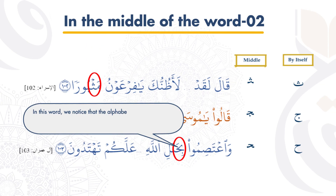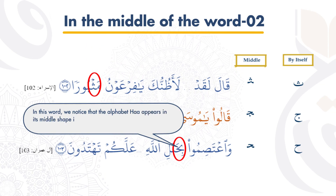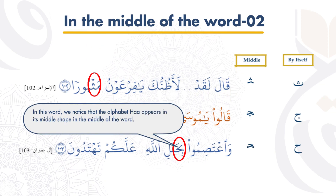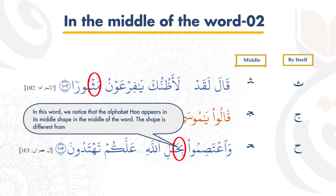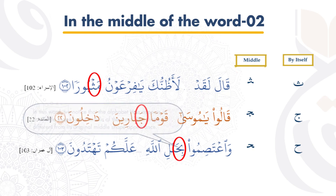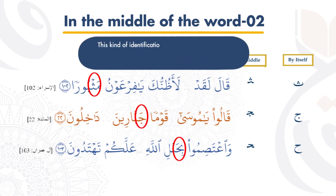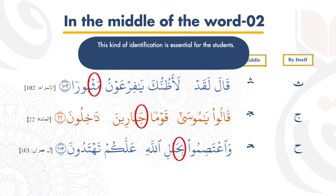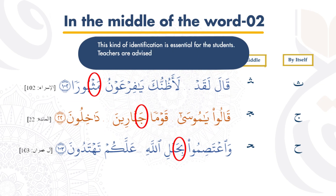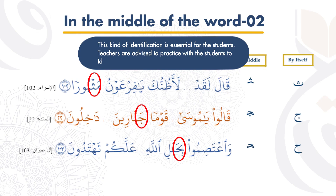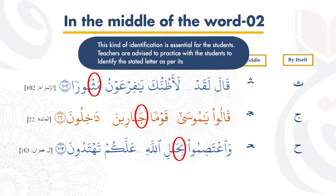In this word, we notice that the alphabet ha appears in its middle shape in the middle of the word. The shape is different from its original middle shape appearance. This kind of identification is essential for the students. Teachers are advised to practice with the students to identify the stated letter as per its shape.